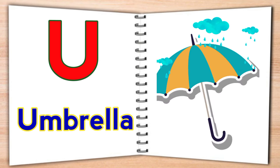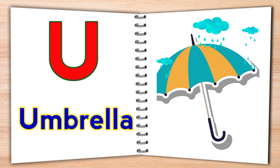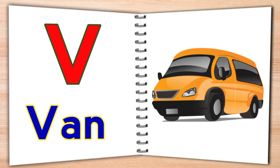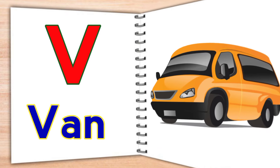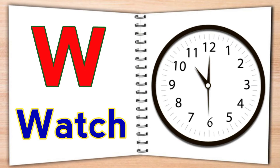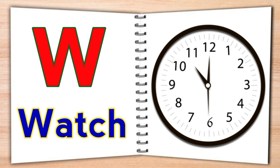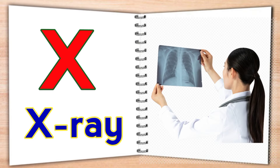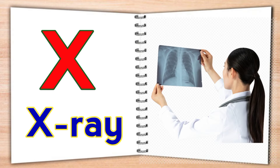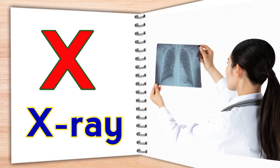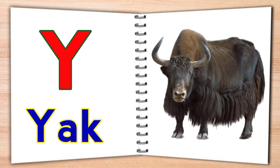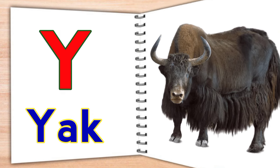U for umbrella, V for van, W for watch, X for x-ray, Y for yard.